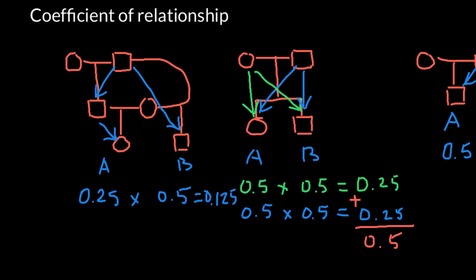Individual A and B also have the same mother. From the mother, individual A is going to get 0.5, or 50%, of its own genetic makeup.